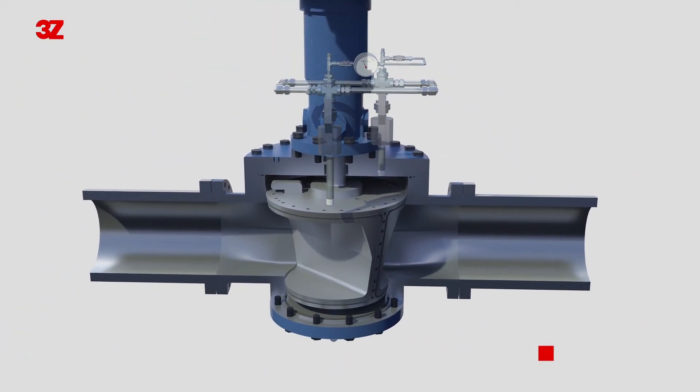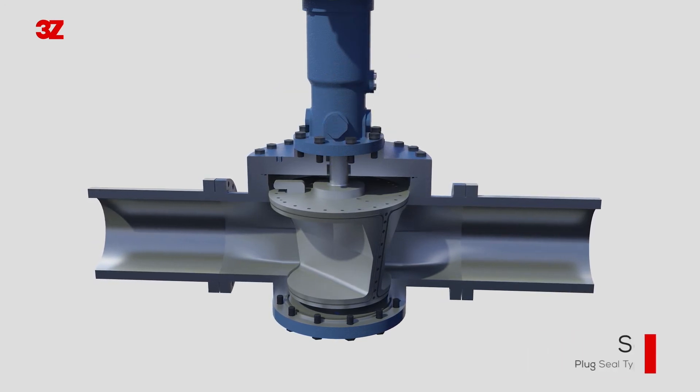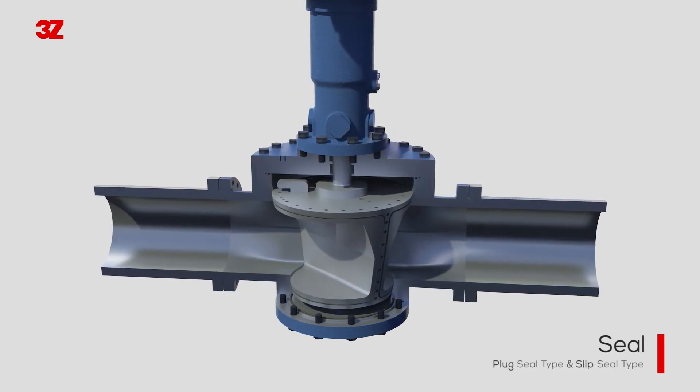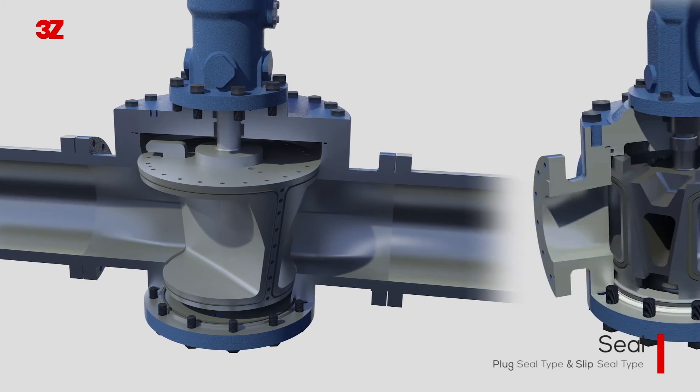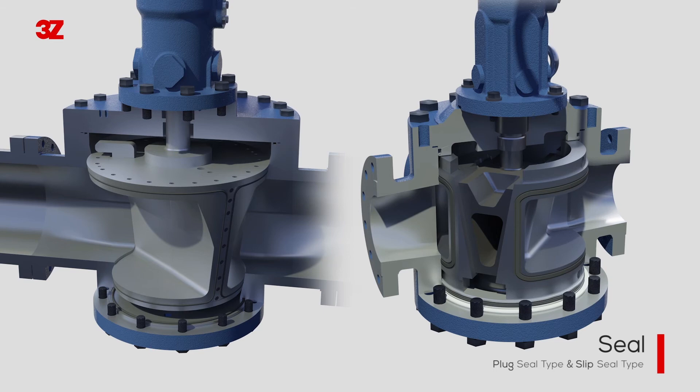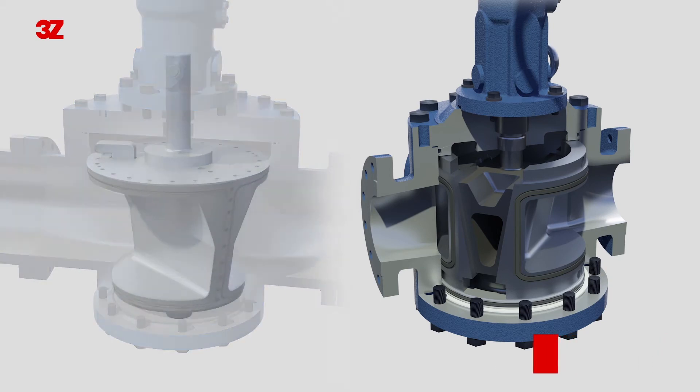The seal uses a soft material basically and we have two types of sealing systems. The plug seal type is attached directly to the plug for large sizes from 10 inches, and the slip seal type is attached to the slip for small valves below 10 inches.